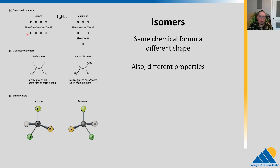We can also get what we call geometric isomers. Here we have butene, where we have two carbons double bonded together — that means they share two electrons, bonded to CH3 and hydrogen on either side. You can see there are two different arrangements: we can have the CH3s both on the bottom, or one CH3 on the bottom and one on the top. These are called geometric isomers. This is called cis — meaning they are on the same side — and this is called trans — meaning they are on the opposite side. You can think of cis as the boat and trans as the chair structure.